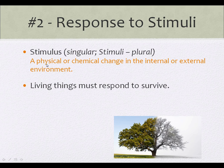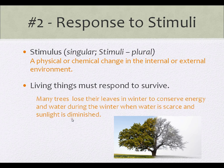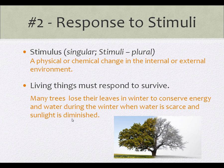It can be a physical thing, such as the wind blowing the leaves on the trees, causing water to evaporate more rapidly out of the leaves. It can be a chemical change, such as a lack of nitrogen in the soil and the roots for the tree. It can be internal or external. Living things must respond to their internal and external environment in order to survive. One way that trees respond is they lose their leaves in the winter to conserve energy and water when water is more scarce.